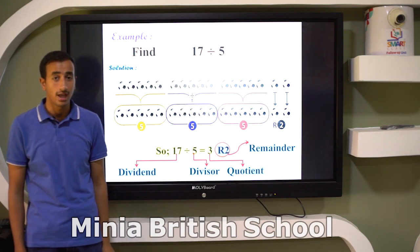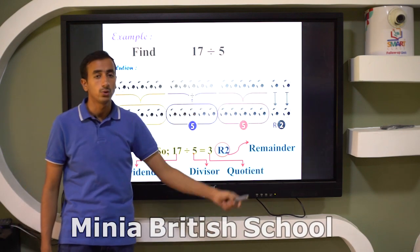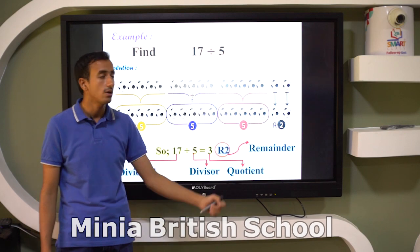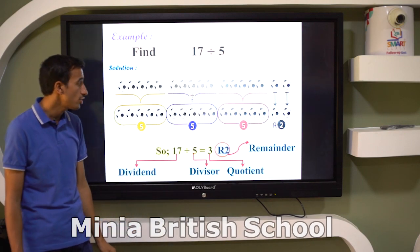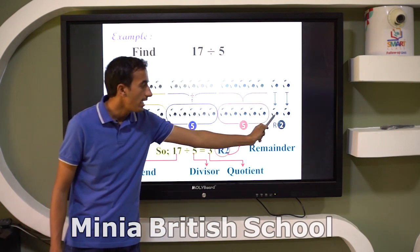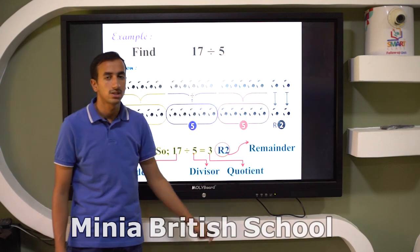Look at this. I have here 17 balls. I can divide it into three equal groups. Each group can put 5 balls, and here we have 2 balls remaining. Two balls are the remainder.